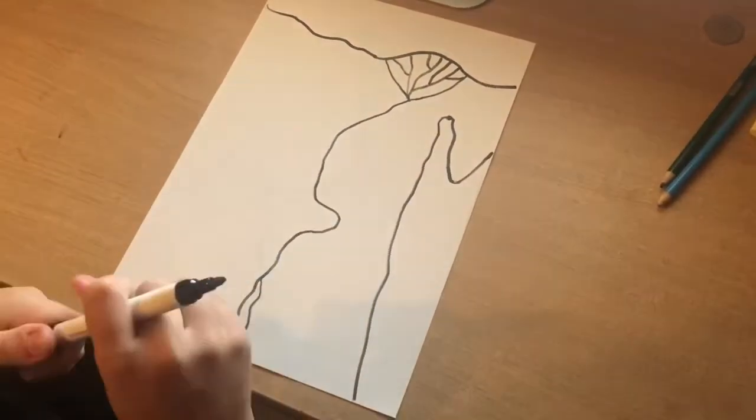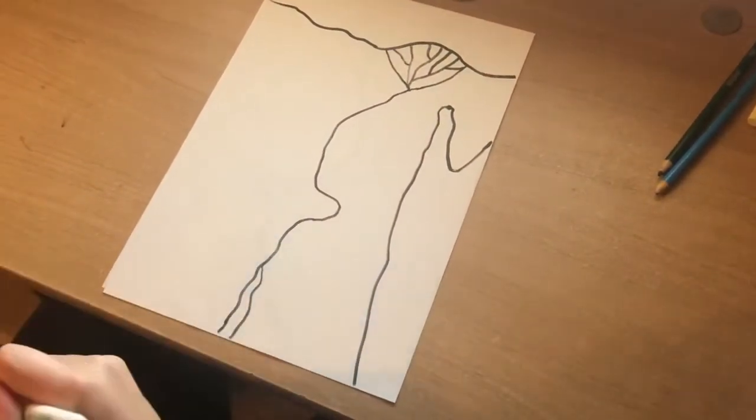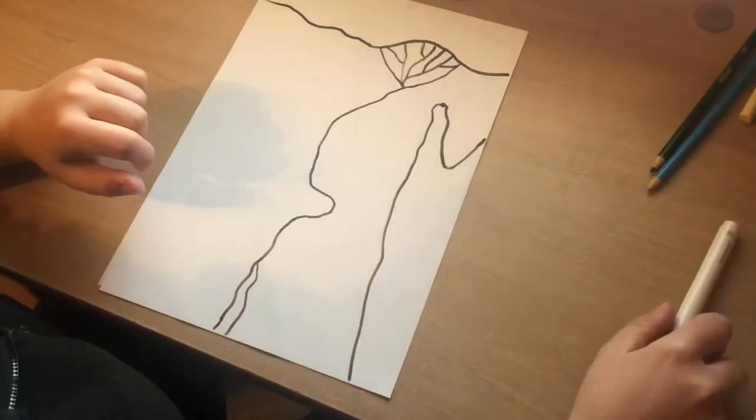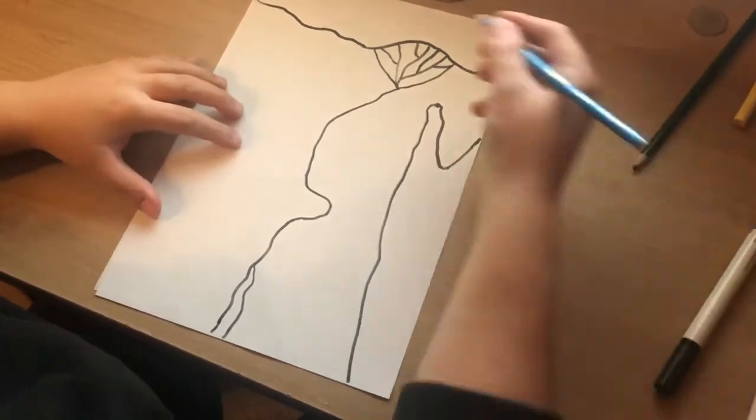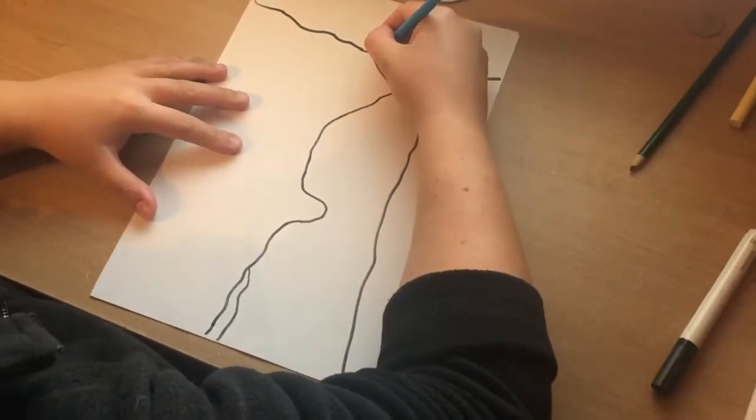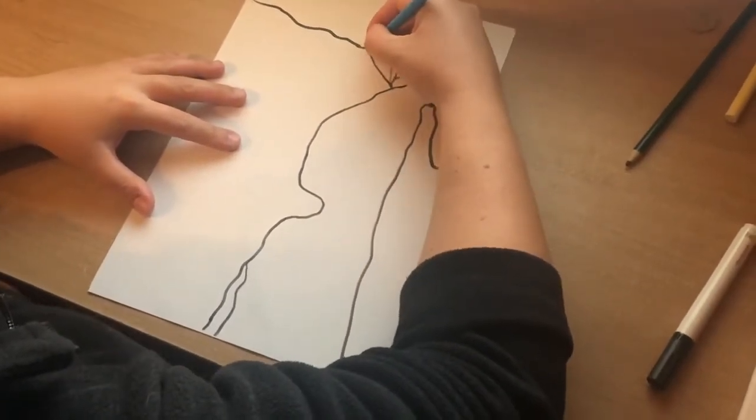So those are the key features of our map. I'm going to go through and add some colour to the water areas now. So I'm going to take my blue and I'm going to colour, so hopefully this will speed up for you now.